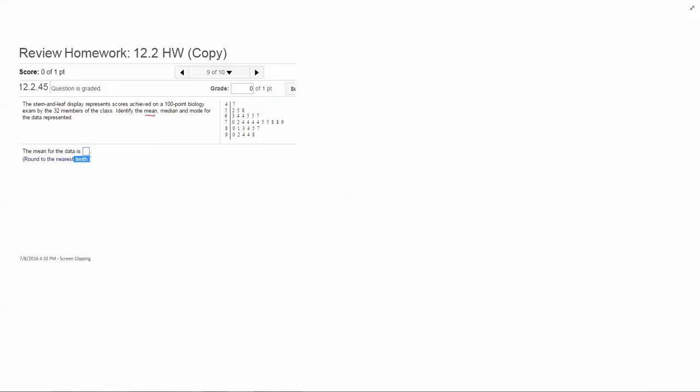The mean is the average of all the numbers. To calculate the mean you have to type in the actual data. You wouldn't type in 7, you would type 47. So you would do 47 plus 52 plus 55 plus 58 plus all the way to the last number 98, and divide that by the total data.